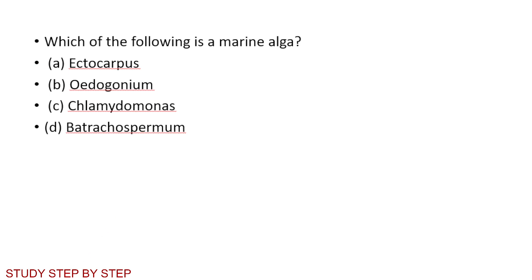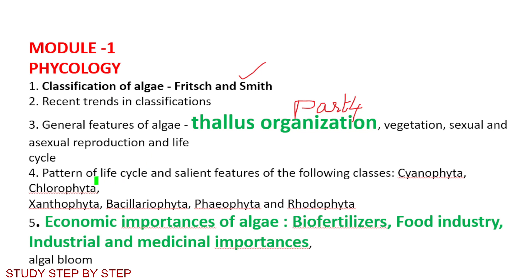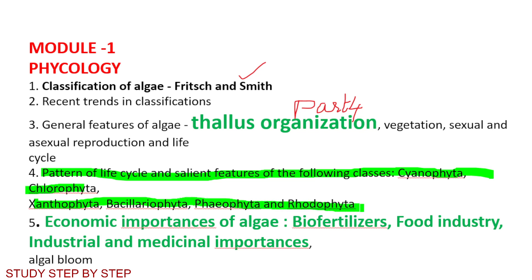In the next class, we will discuss patterns of life cycle and salient features of the following classes of algae: Cyanophyta, Chlorophyta, Xanthophyta, Bacillariophyta, Phaeophyta, and Rhodophyta. If you have any questions, please like and comment. Thank you.